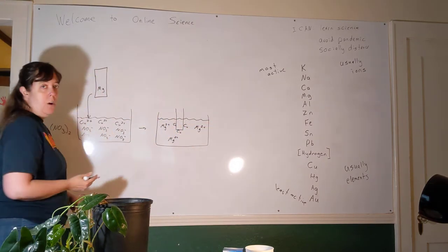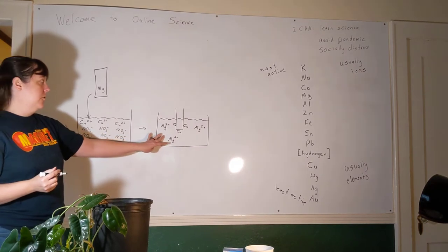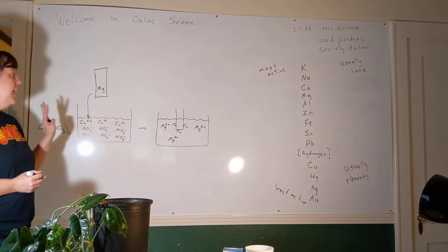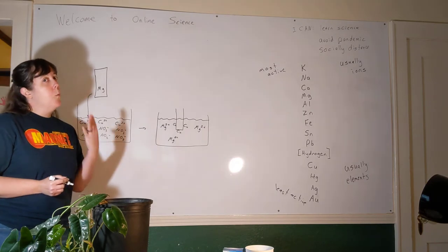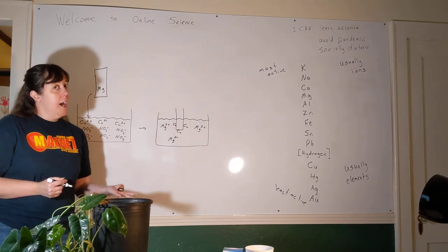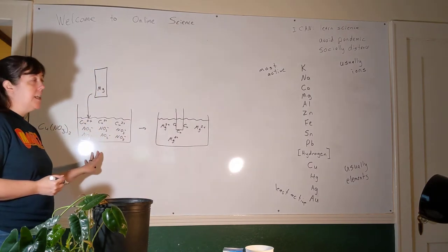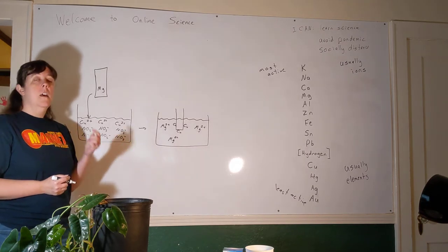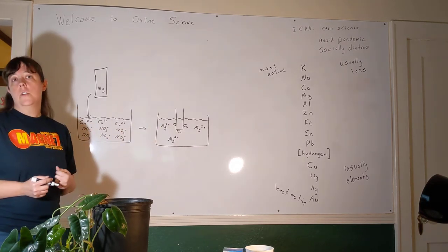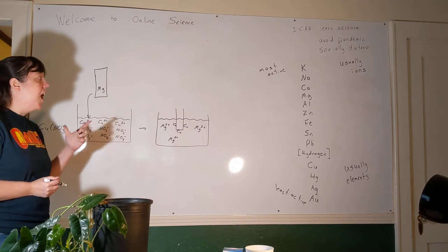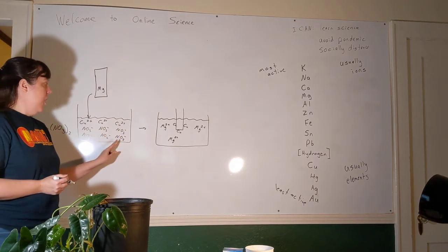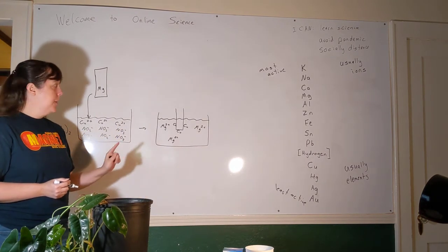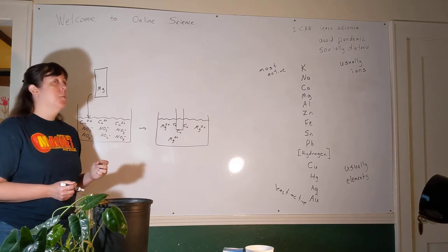I'm not drawing the nitrate ions in this solution because it gets too busy and hard to understand. The nitrate ions — if we were to write the complete ionic equation and the net ionic equation — what kind of ions are they? That's actually one of the questions for today: what kind of ions are the nitrate ions in this reaction?